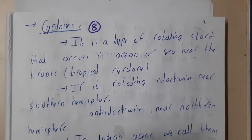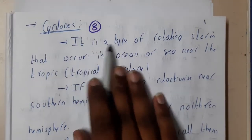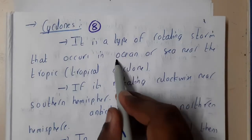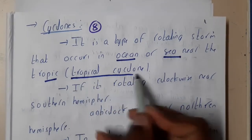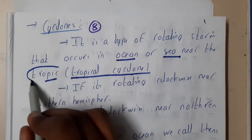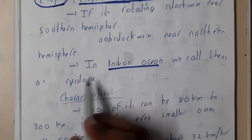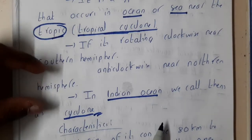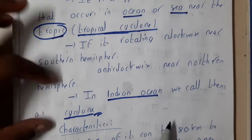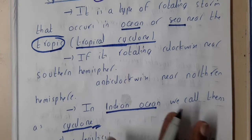So basically, what is a cyclone? A cyclone is a storm which occurs in the ocean. It is a type of rotating storm that occurs in the ocean or sea near a tropic — that is called a tropical cyclone. If it occurs near the tropic it is a tropical cyclone; if it occurs in the Indian Ocean it is called a normal cyclone. That is the only difference — the characteristics and everything else are the same.